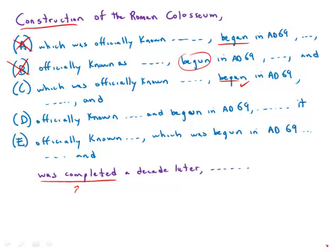Answer choice D puts 'officially known and begun' in parallel, and then 'was completed' — so it puts two different things in parallel incorrectly. This disrupts the parallelism and puts the wrong things in parallel, so D is not correct.